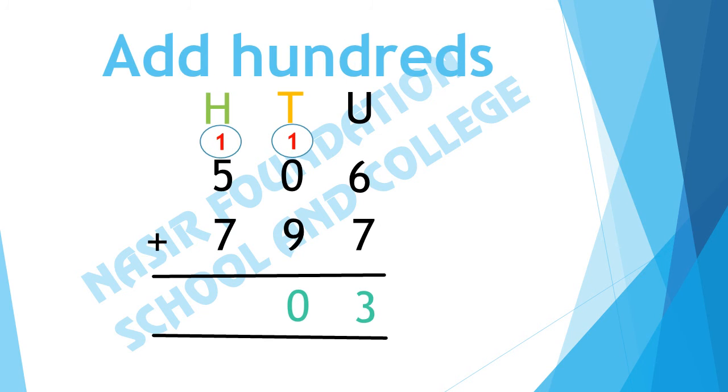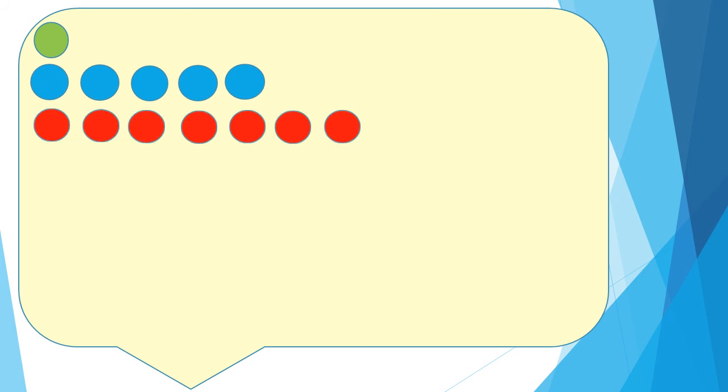After the addition of tens we will move towards hundreds. In hundreds column there is 1, 5 and 7. Now we will add 1, 5 and 7. In 1 we will add 5 and then we will add 7. Let's count them together.